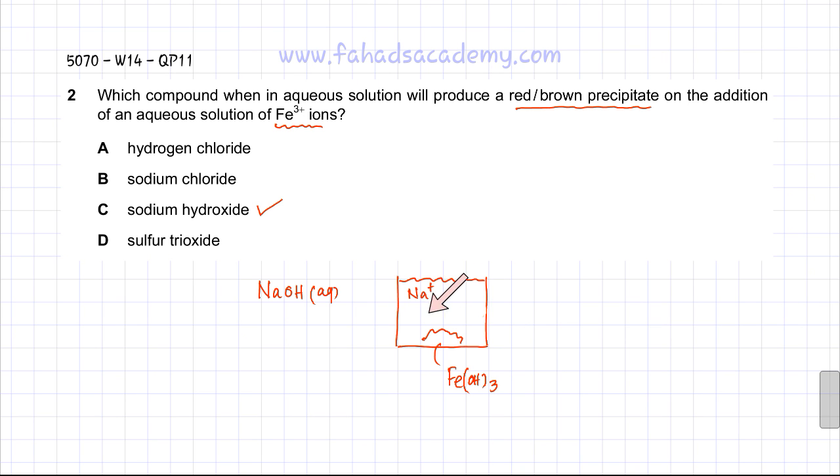The sodium ions are soluble and remain in the solution, whereas Fe(OH)3, the red-brown precipitate, settles at the bottom. Hence, option C is the correct option for this question.